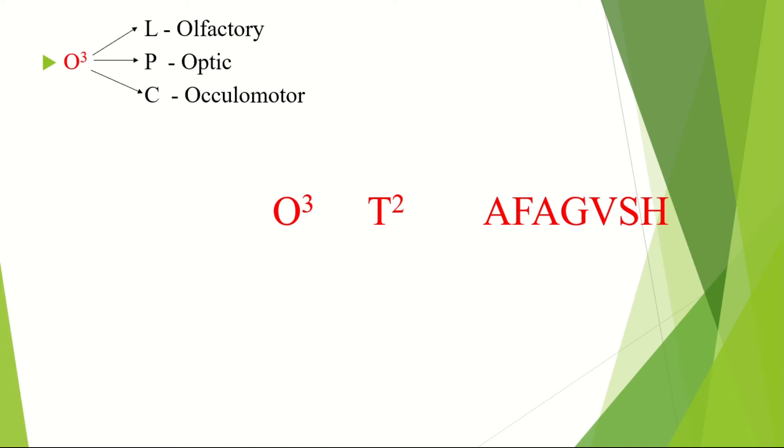In the second one, T squared, remember tro-tri. Just repeat it a few times and it'll stick in your mind. Tro for trochlear and tri for trigeminal.